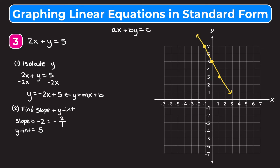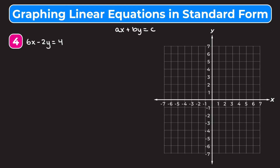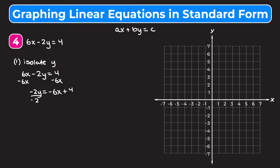Let's go through one more example like this. I encourage you to pause the video and try it on your own. So we have 6x minus 2y equals 4 and we're going to change it into slope-intercept form. We subtract 6x from both sides, leaving negative 2y on the left and negative 6x plus 4 on the right. Then we divide every term by negative 2: negative 2 divided by negative 2 is 1, giving us y; negative 6 divided by negative 2 is positive 3; and positive 4 divided by negative 2 is negative 2. So we get y equals 3x minus 2.